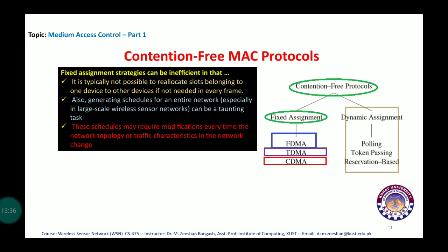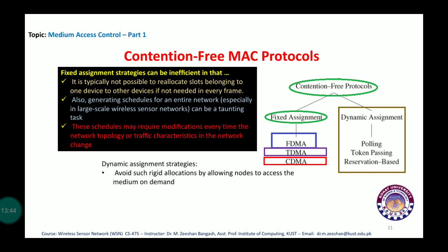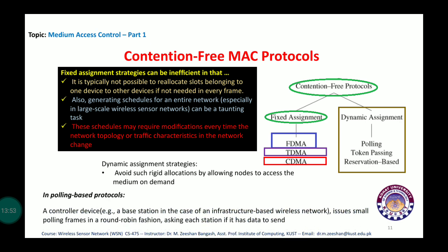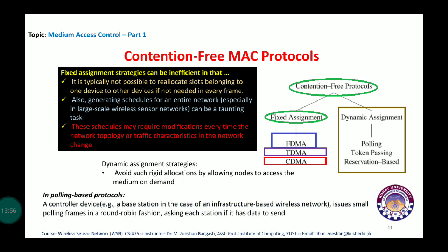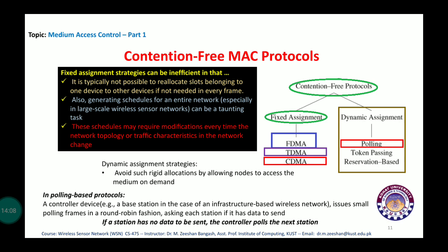The second contention-free category is dynamic assignment strategies, which avoid rigid allocation by allowing nodes to access the medium on demand. In polling-based protocols, a controller device such as a base station issues polling frames in a round-robin fashion, asking each station whether it has data to send. If a station has no data, the controller moves to poll the next station.